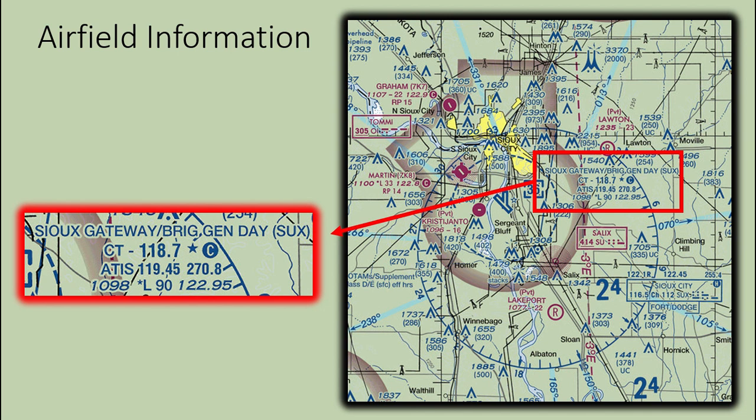122.95 is the UNICOM frequency. UNICOM stands for Universal Integrated Community. UNICOM is a non-government radio communication station that may provide airport information at public use airports where there is no control tower or flight service station. On pilot request, UNICOM stations may provide pilots with weather information, wind direction, recommended runway, and other necessary information.